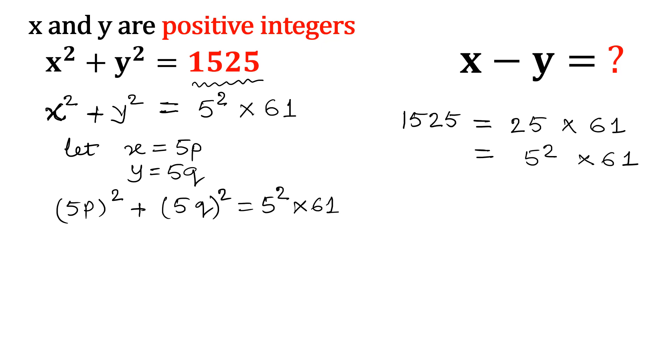Now divide both sides by 5 square. So the equation will turn into p square plus q square equal to 61. This result is very important in this question context because two numbers' squares addition.